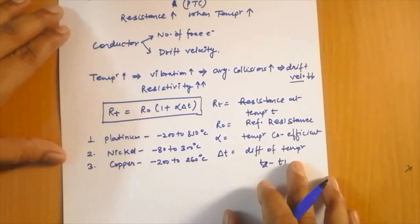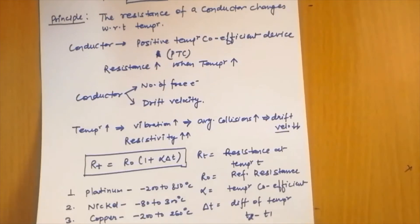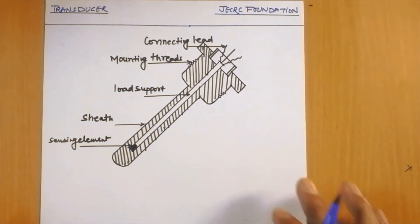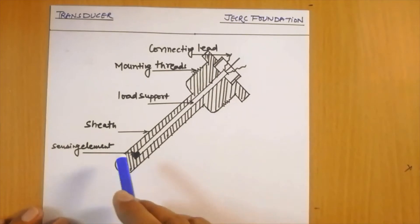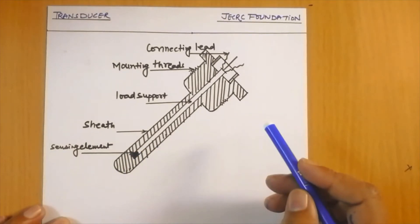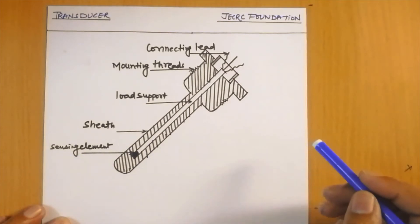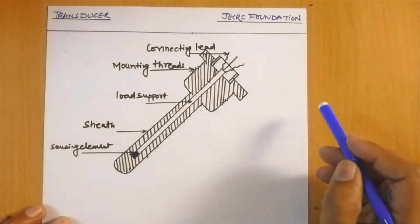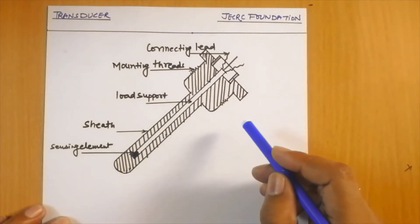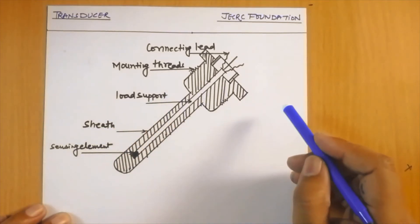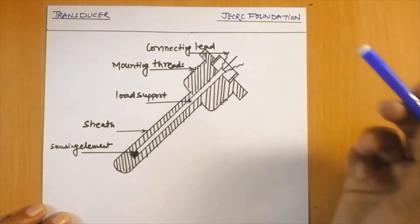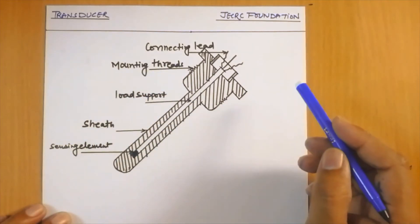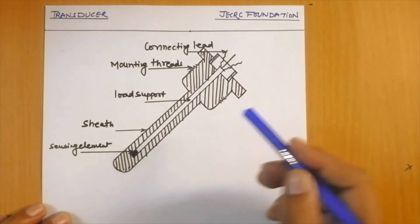The basic construction of an RTD consists of a sensing element used to sense the temperature — generally copper, nickel, or platinum. A protective sheath protects the device from mechanical damage or contamination. A lead support holds the connection leads that connect to the external circuit, and mounting threads connect the RTD to any external device.